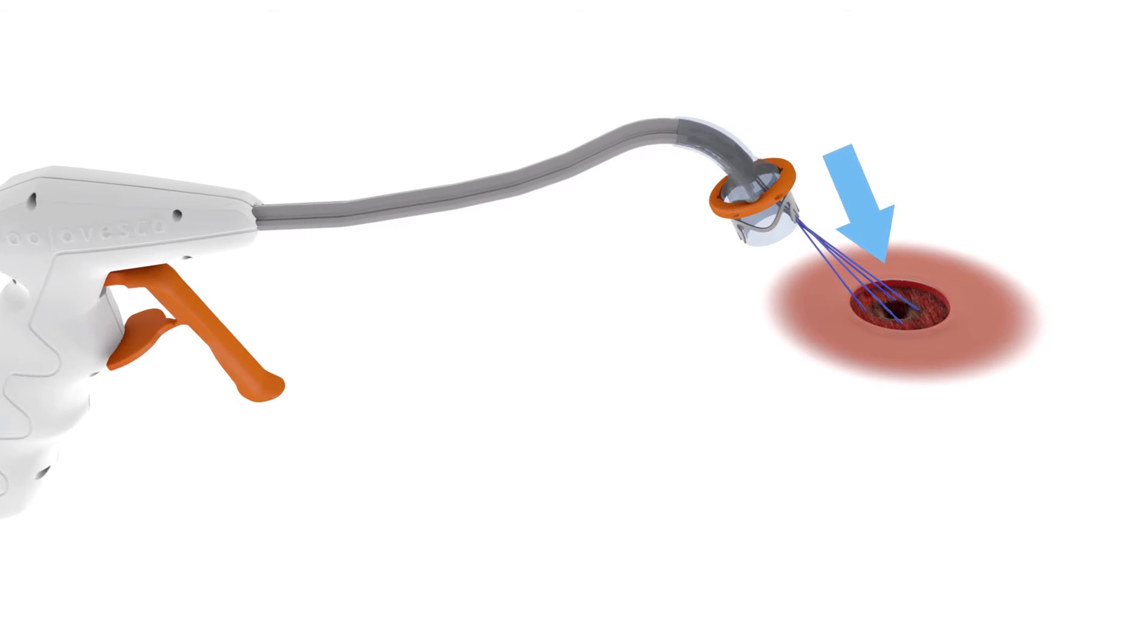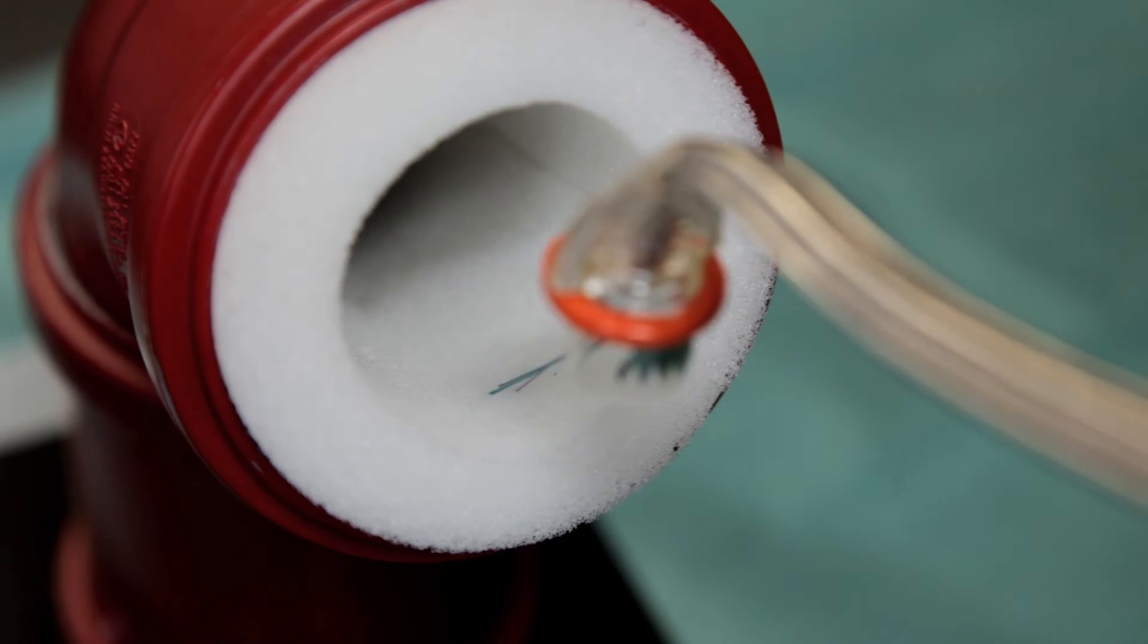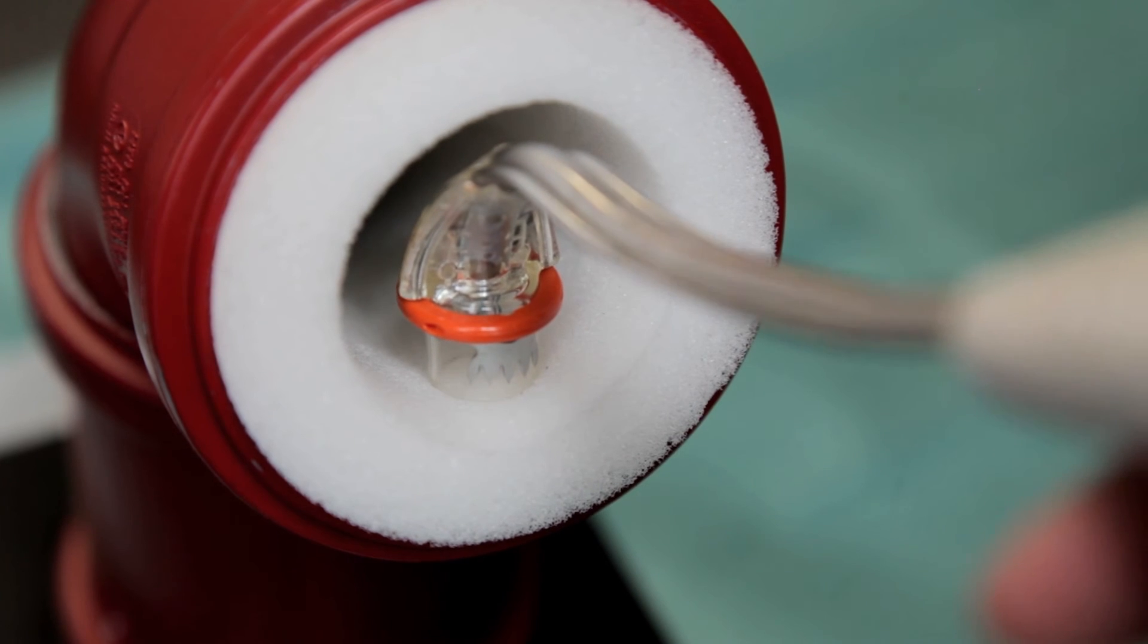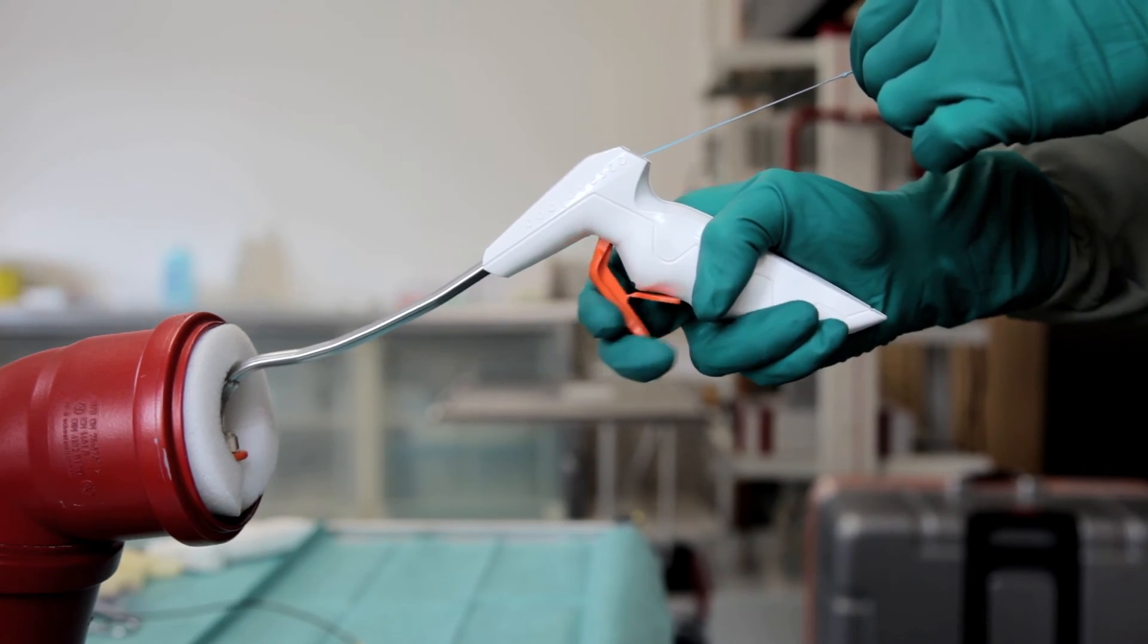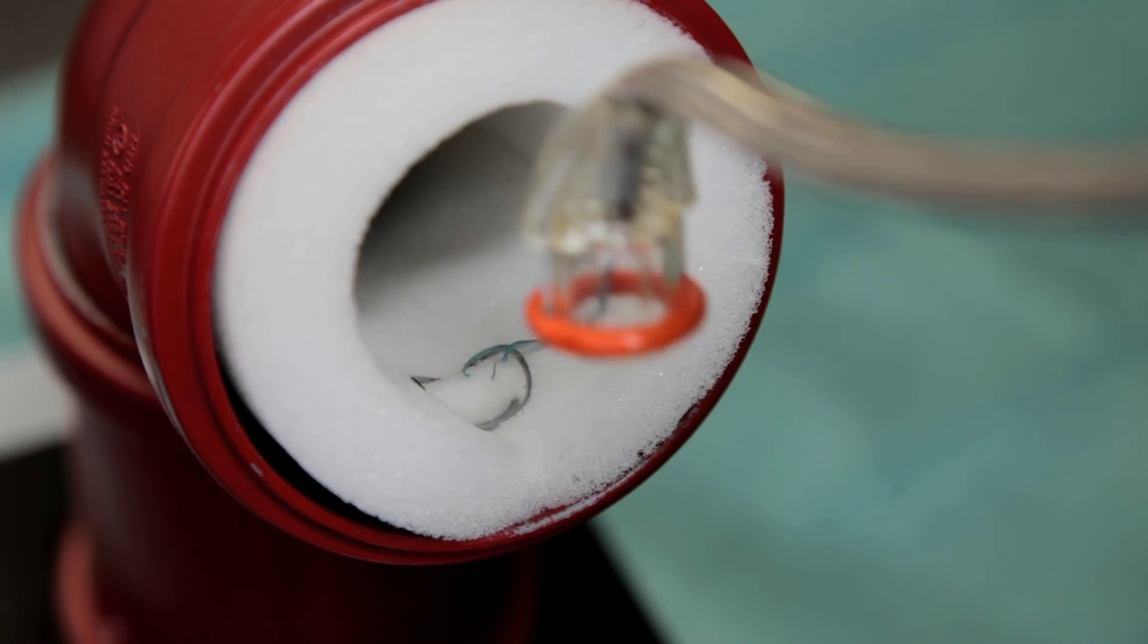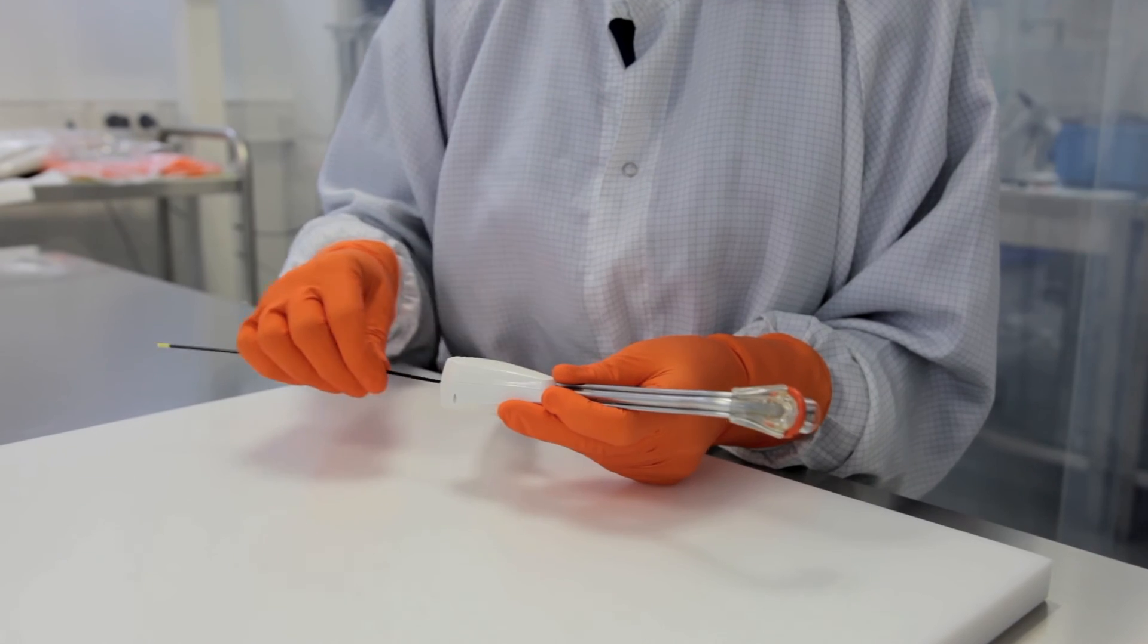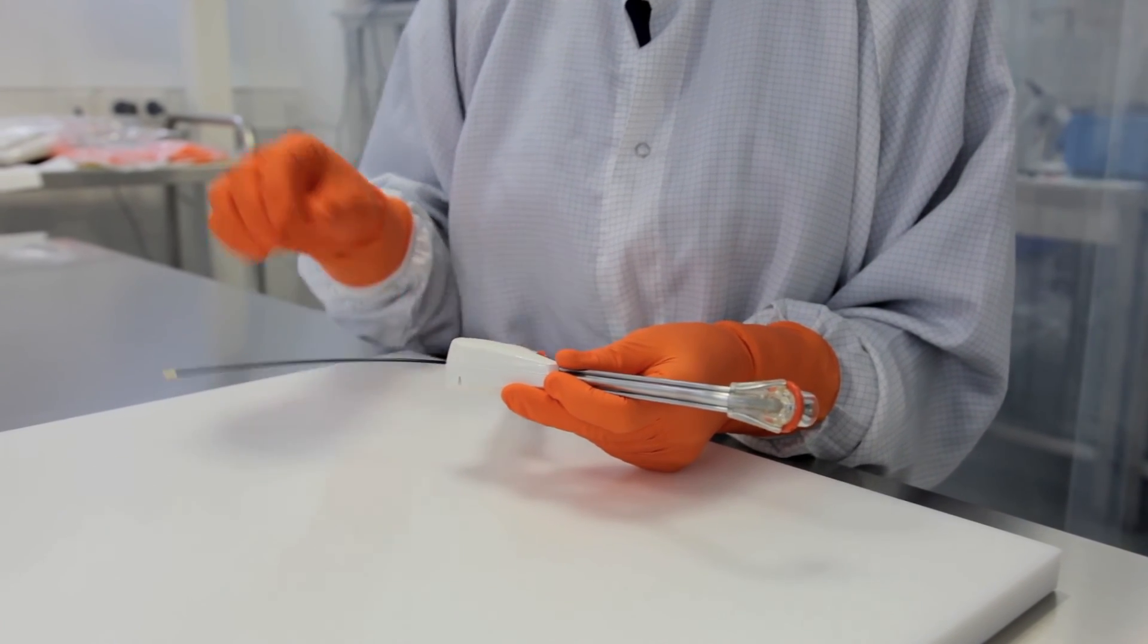Following catheter drainage of the fistula and other initial preparatory steps, the OTSC Proctology Instrument is pushed on guiding sutures to the centre of the fistula and the clip is then applied. This low risk method is particularly suitable for initial treatment of complex anal fistulas and achieves, in the majority of interventions, a complete healing of the fistula.